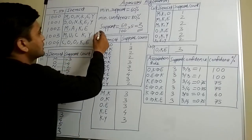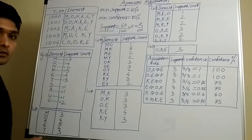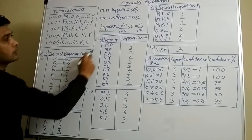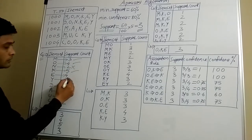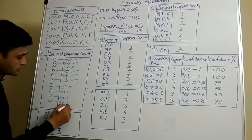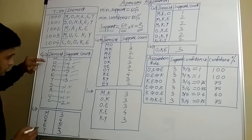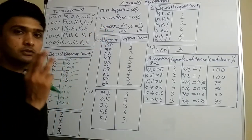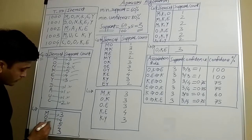Now the next step: since the value of support is 3, we use this to eliminate values from C1. We will only consider items that have a support count of at least 3. So we will get a filtered table called L1. The items M, O, K, E, and Y are kept because they have support count 3 or more than 3. The items with support count less than 3 are not considered.